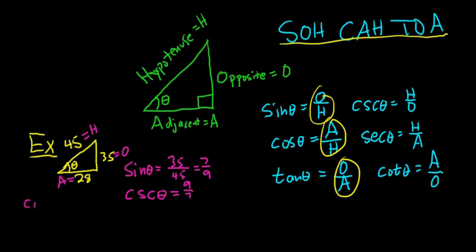Let's do cosine now. So cosine. So it's SOH-CAH-TOA. So it's A over H. So A is 28. And then H is 45. And the reciprocal of this would be the secant function. So secant of theta would be 45 over 28.